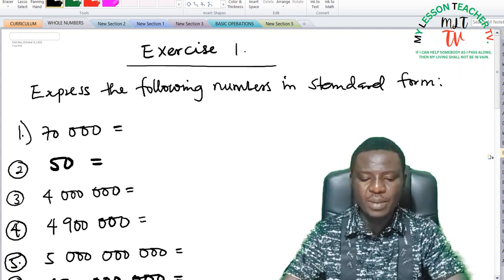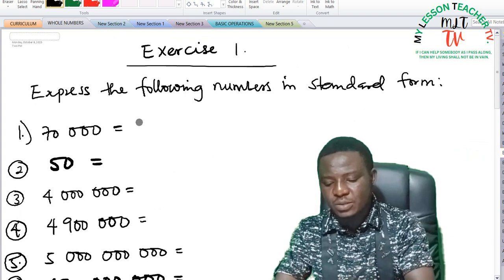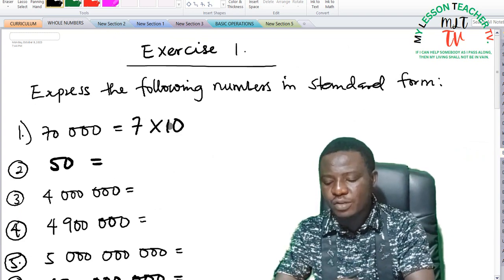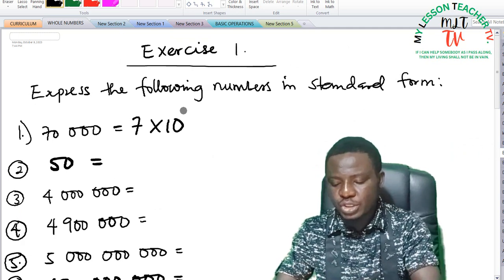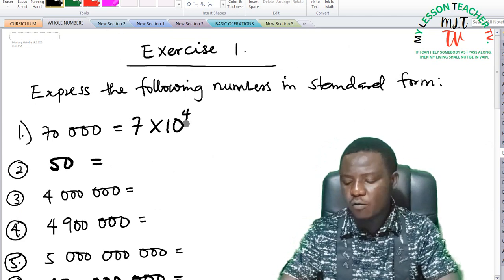Exercise 1 says we should express the following numbers in standard form. 70,000 can be expressed as 7 times 10 raised to the power of the number of digits after 7, which is 4. So this is 7 times 10 raised to the power of 4.